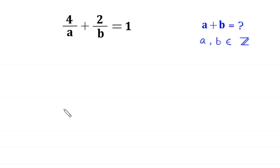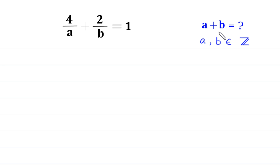Hello, welcome to how to solve this very nice algebra equation. 4 over a plus 2 over b is equal to 1. We need to find all possible values of a plus b, where a and b are integers.